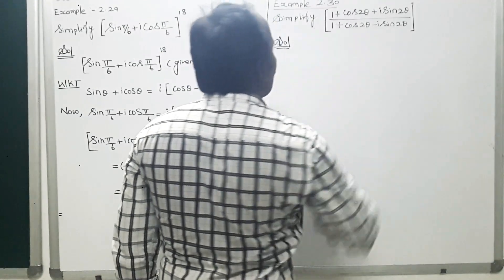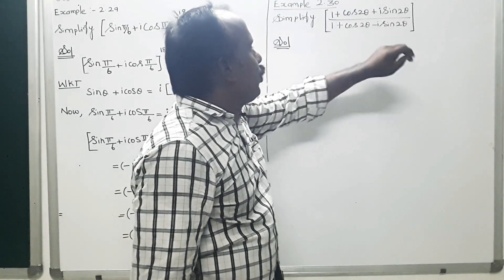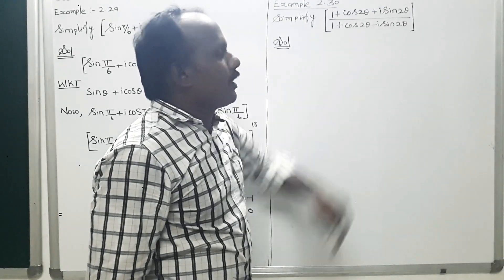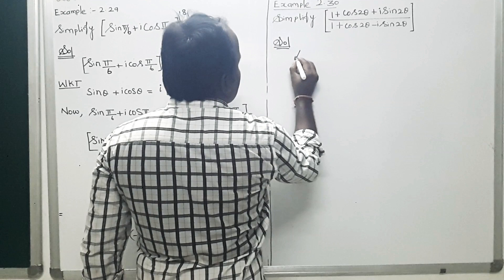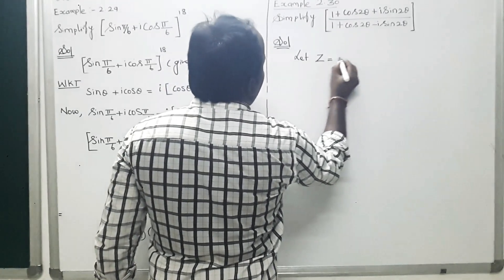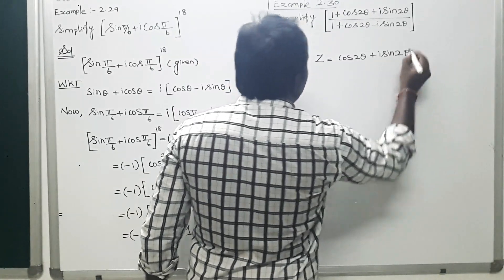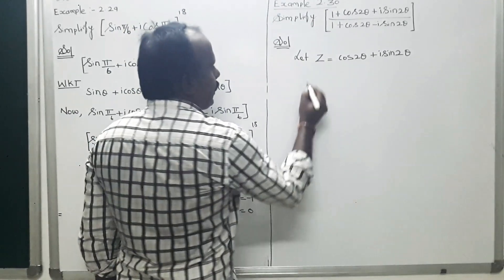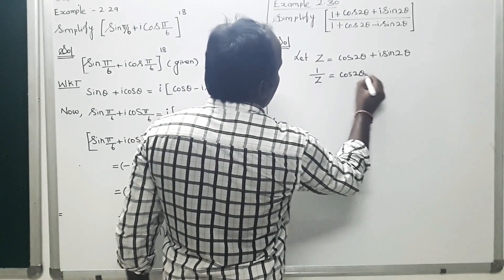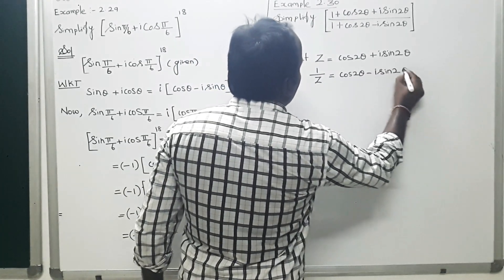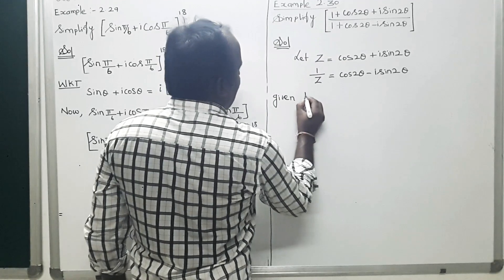Next, Example 2.30. Simplify [(1 + cos 2θ + i sin 2θ) / (1 + cos 2θ − i sin 2θ)]^30. Let z = cos 2θ + i sin 2θ, so 1/z = cos 2θ − i sin 2θ.